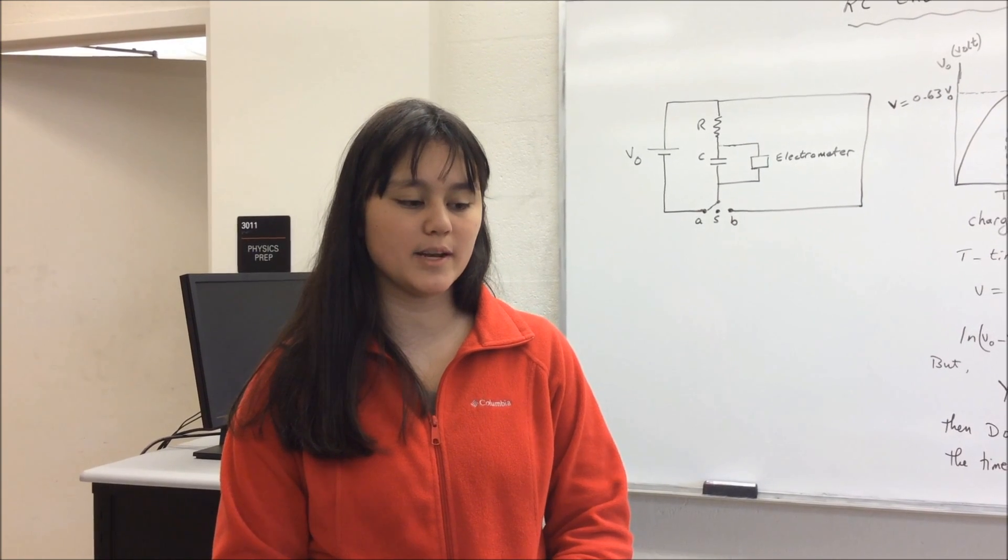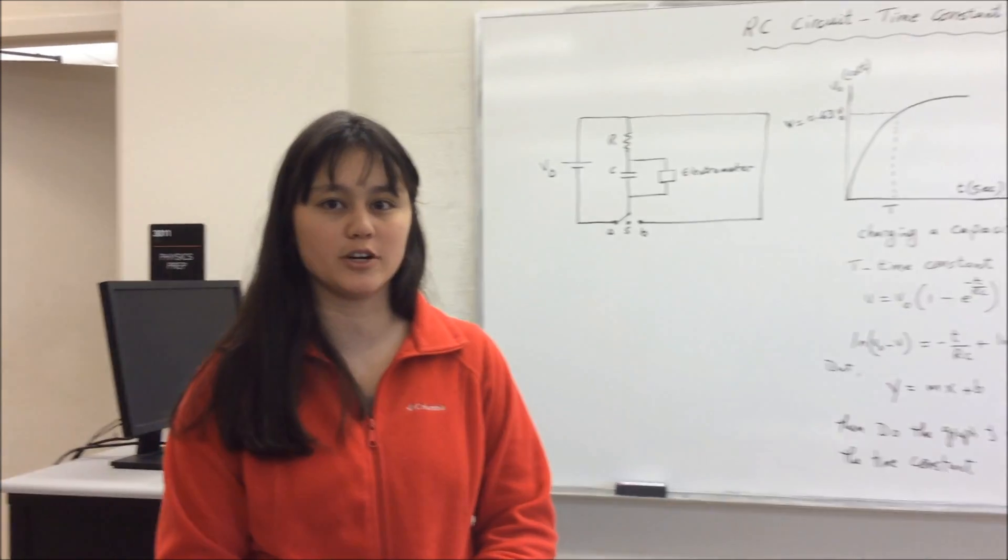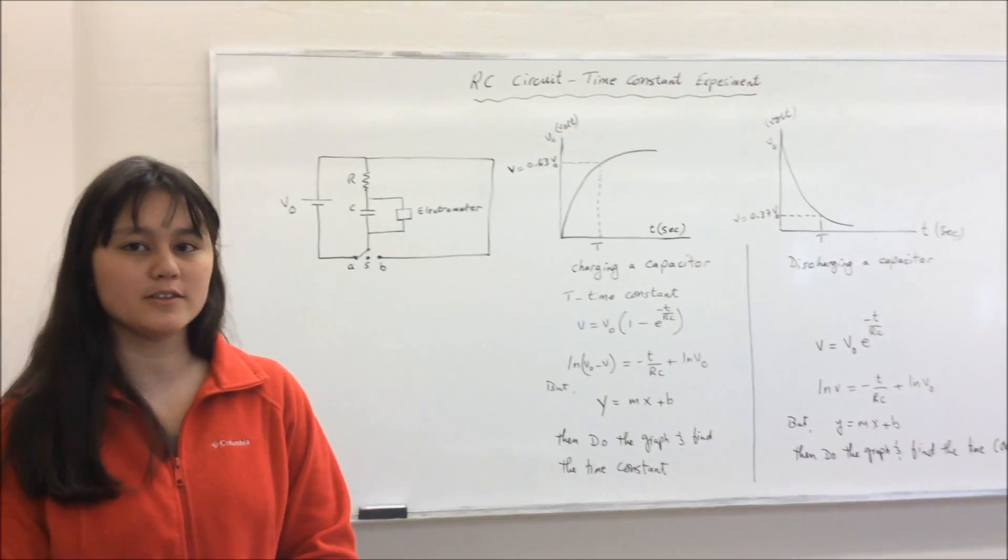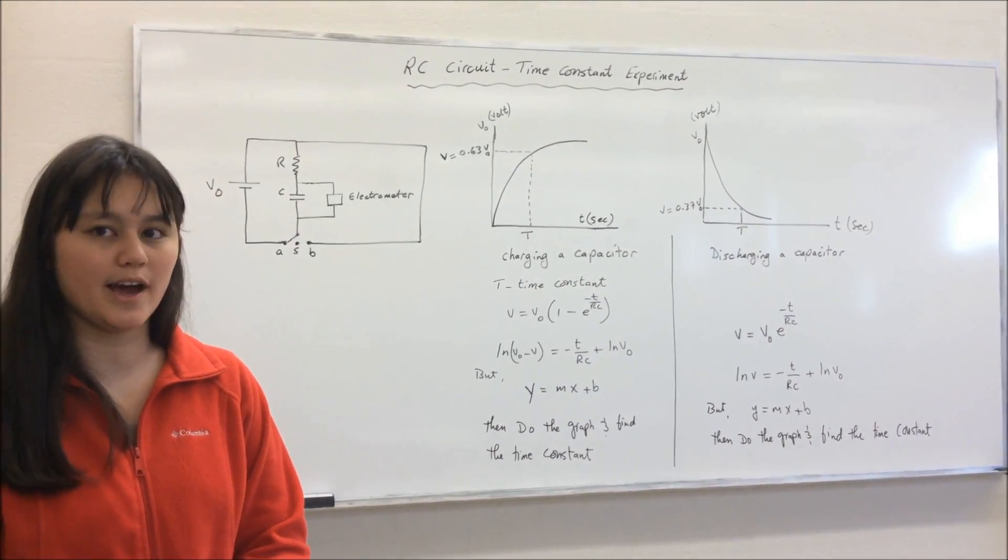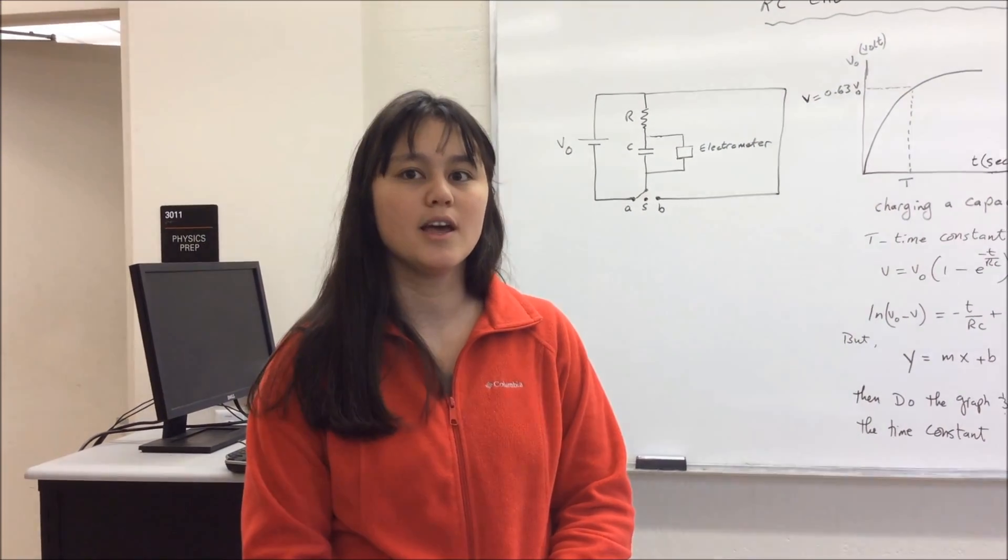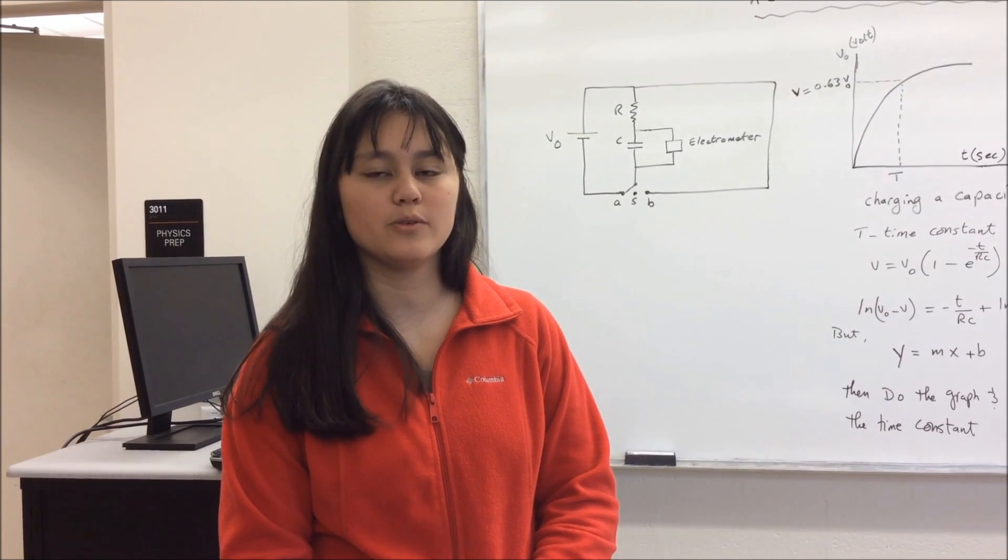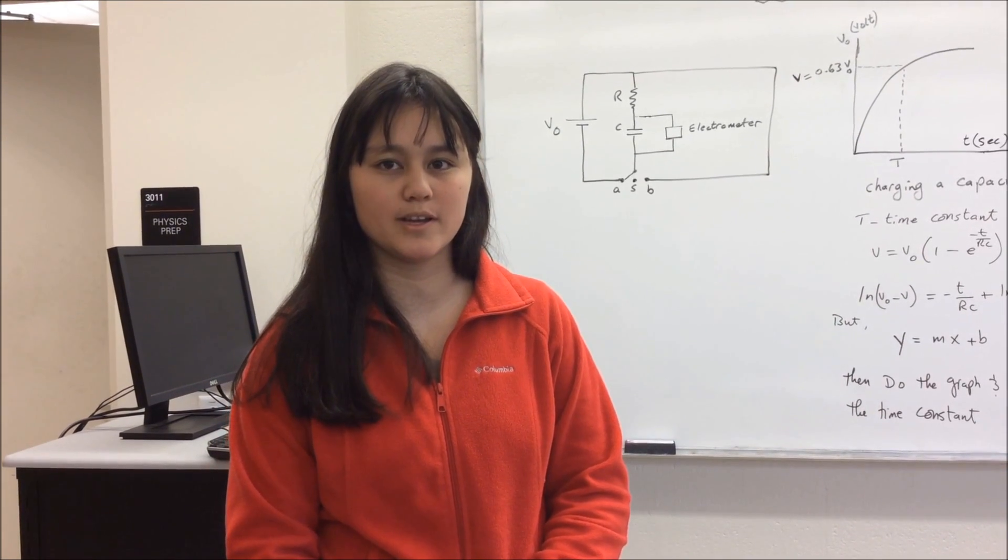You're going to, using the data points that you collected, you're going to make two graphs, one for charging and one for discharging. Then you're going to find the slope for each of the graphs, and take the average of the two slopes, and that's going to be your experimental time constant. Then, when you find the experimental time constant, you're going to compare it to the theoretical time constant using percent error.